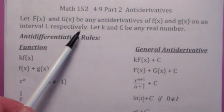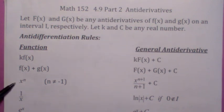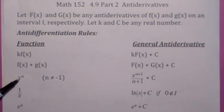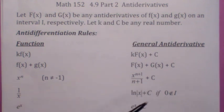We're assuming that big F and big G are the antiderivatives of little f and little g on some interval I, and k and C are any real number. Here's the one that's probably the most useful. The most general antiderivative of x to the n, as long as n doesn't equal negative one, you add one to the exponent and divide by the new exponent plus C.